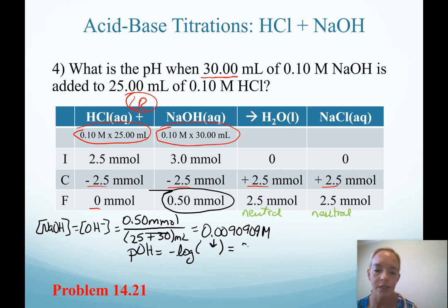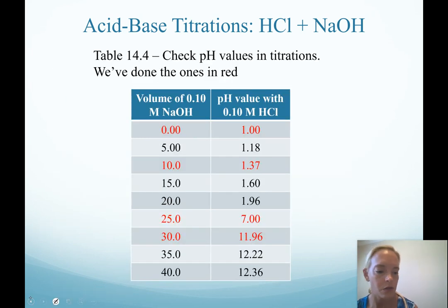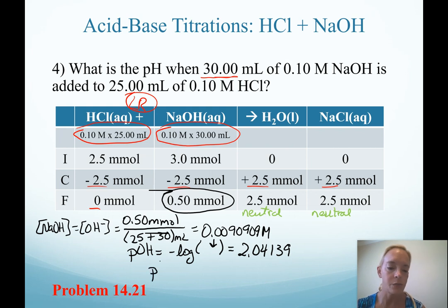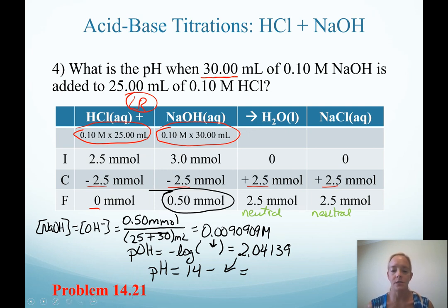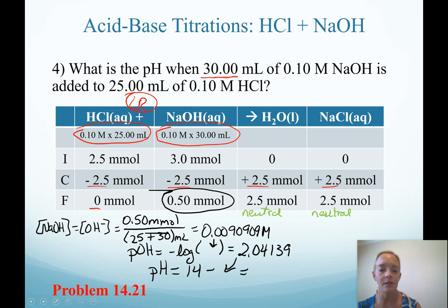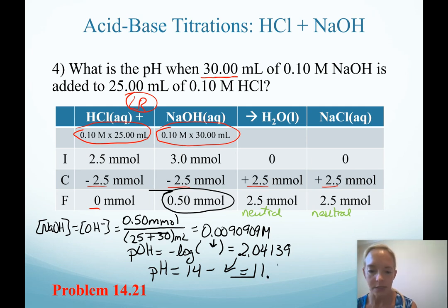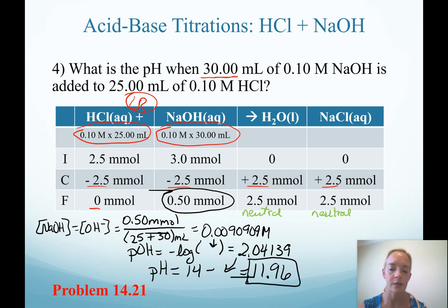Our pOH is 2.04. Then of course, pH equals 14 minus pOH. It's helpful to label your calculations, and you should recognize that this solution can't have a pH of 2 — we have excess base, so we must have a high pH. When we calculate 14 minus 2.04 and round for significant figures — both concentrations go to 2 sig figs, so our pH goes to 2 decimal places — we get a pH of 11.96.